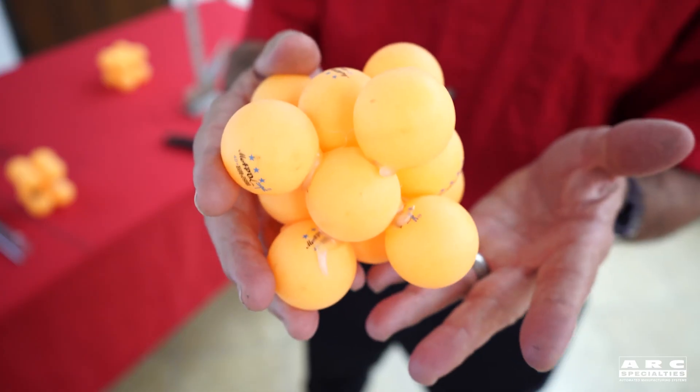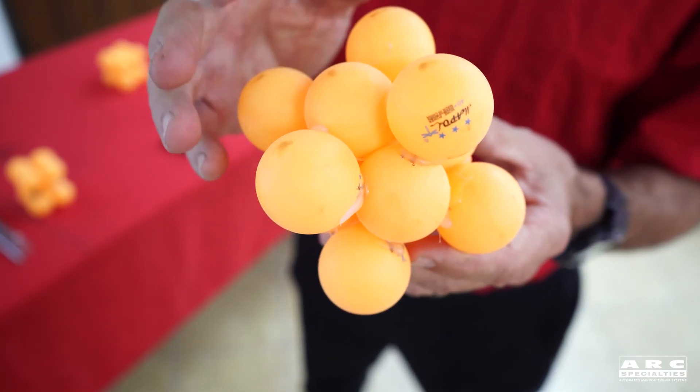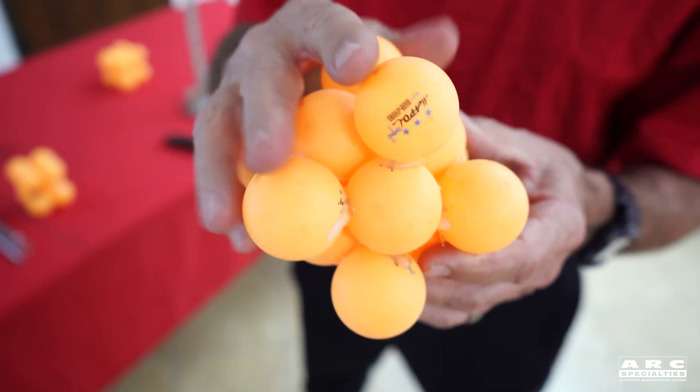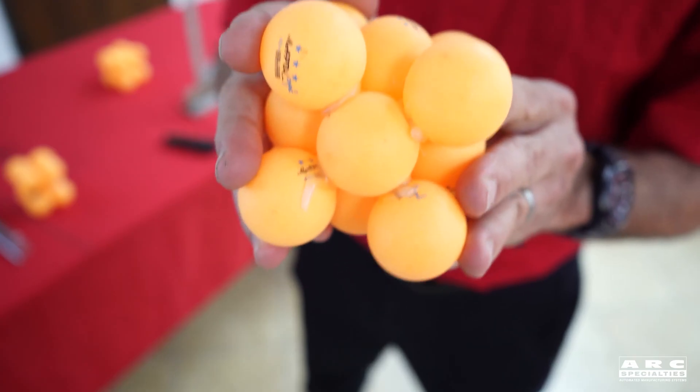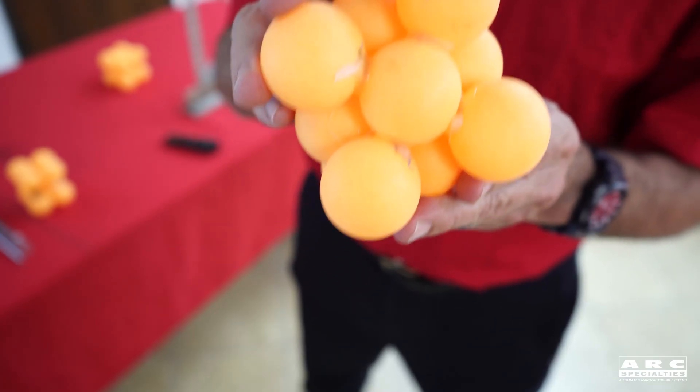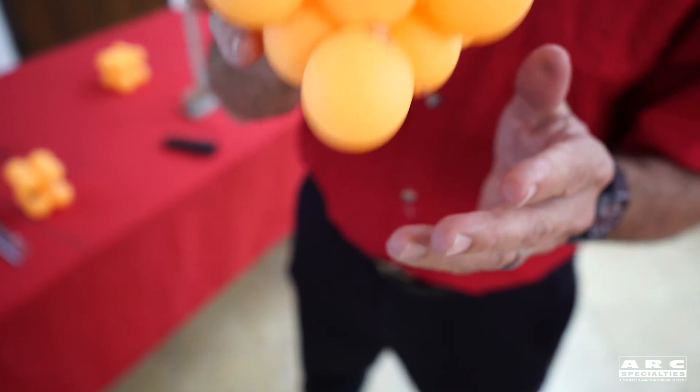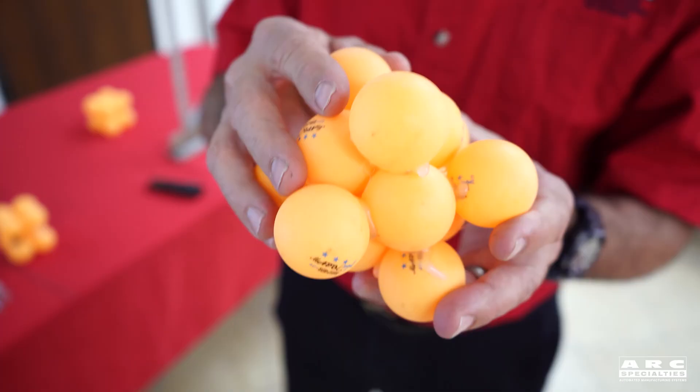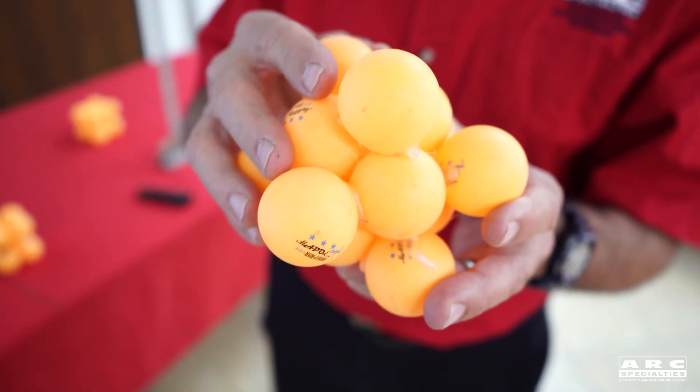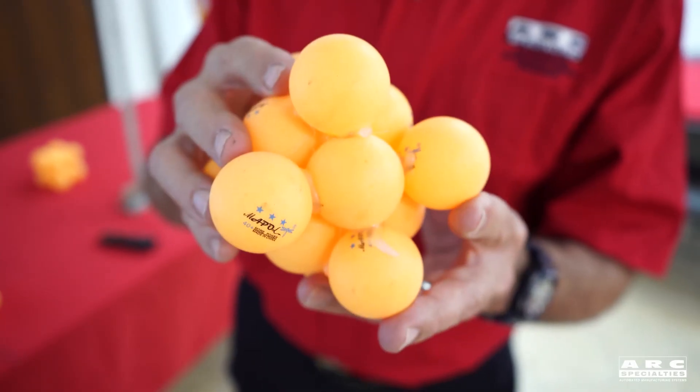Gamma iron, also called austenite. This is iron above 1,340 degrees Fahrenheit. It's face-centered cubic, which means we have five atoms here, five atoms here, and four in the middle. It can have up to two percent carbon by weight inside the matrix at elevated temperatures. This is non-magnetic, and it has a higher packing density. It's 0.74 packing density compared to the 0.68 of alpha iron - eight percent more. This is denser.